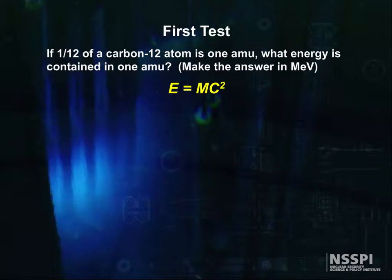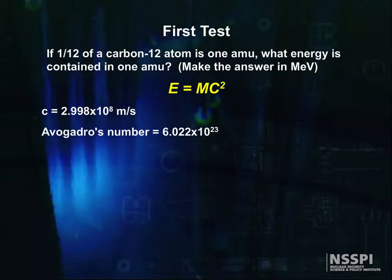It's probably an E equals MC squared thing. So here's C, the speed of light. And somewhere or another, we'll probably use Avogadro's number — and here it is.